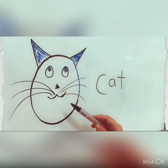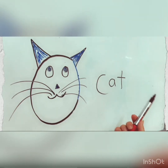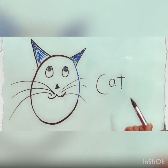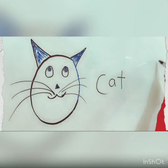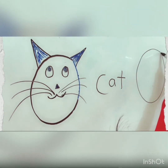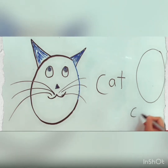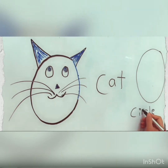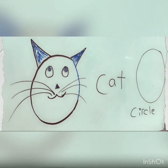C for cat, C for circle. Cat — circle. For cat, for circle. Excellent, very good!